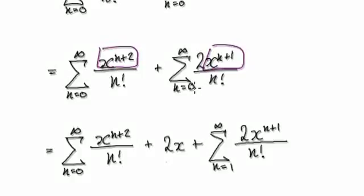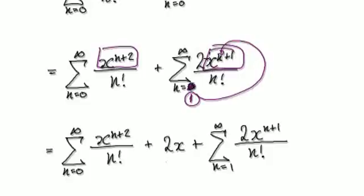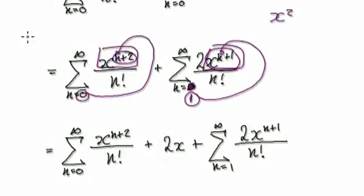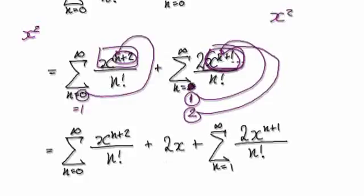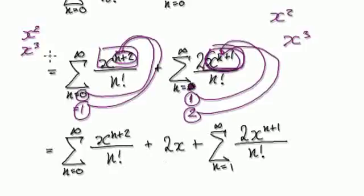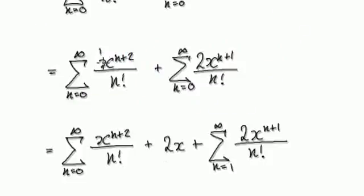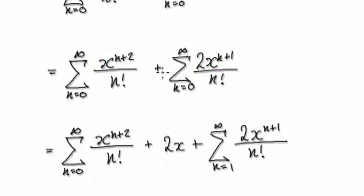If you look at this: instead of starting at n equals 0, if you start at n equals 1, and this one starts at n equals 0 — look what happens. If you put n=0 into here, that will give you x squared. If n starts at 0, the next term will be when this is 2 and this is 1, so putting n=1 into here gives you x to the power of 3. The point is there is a way of merging these two blocks together — they're out of phase by 1.